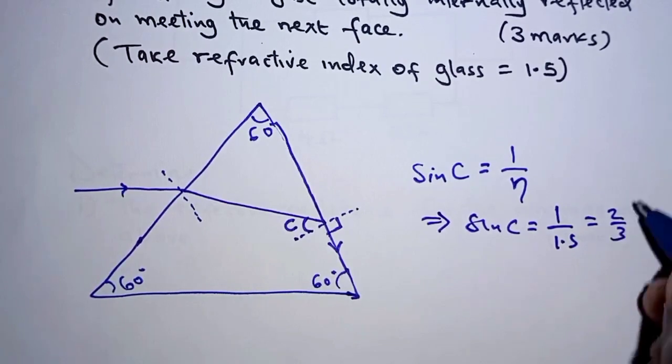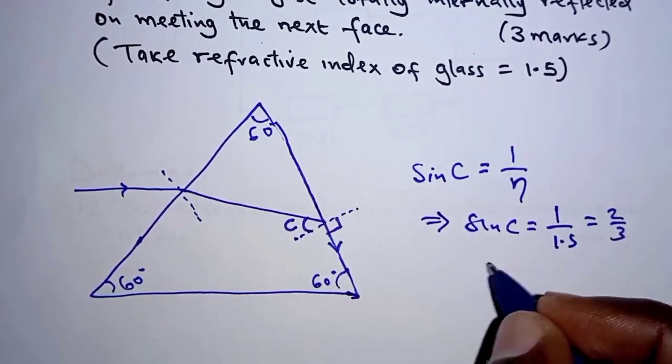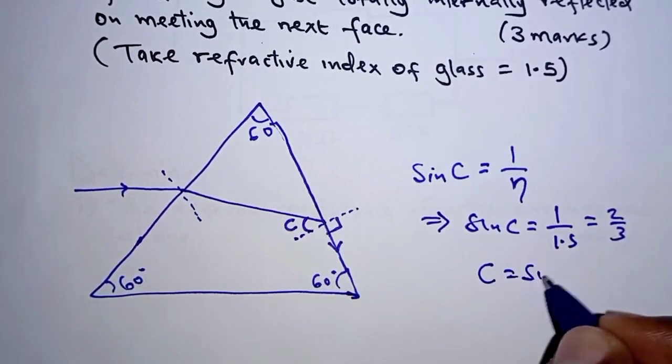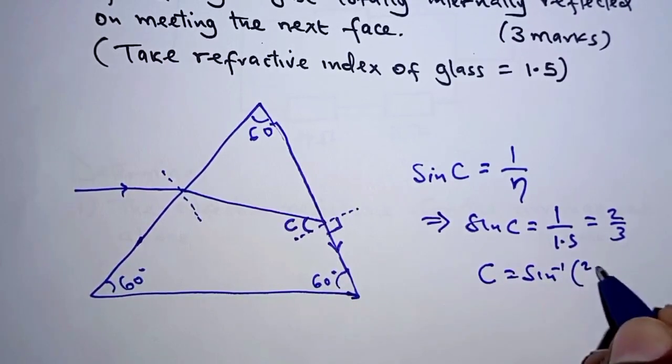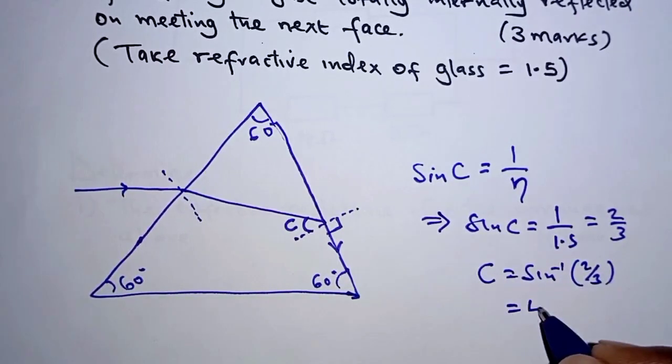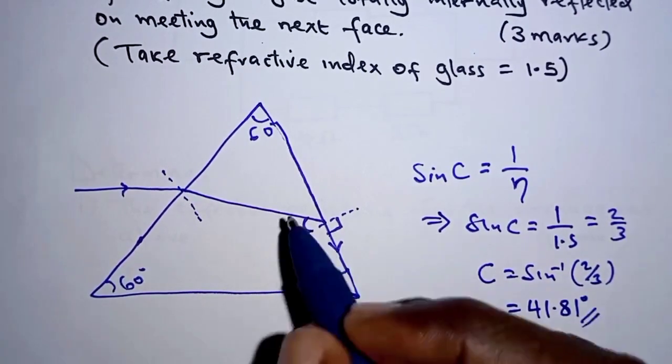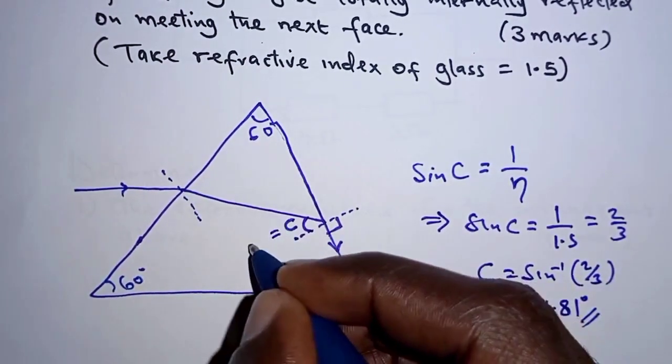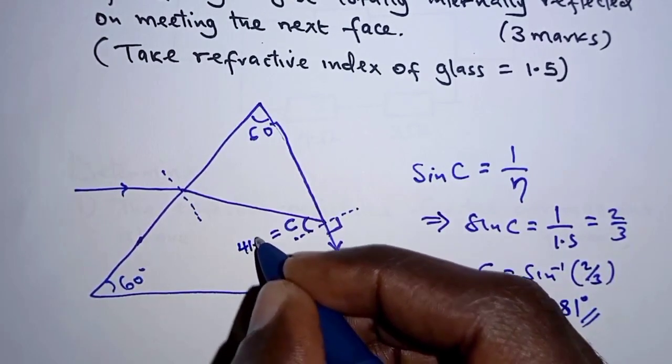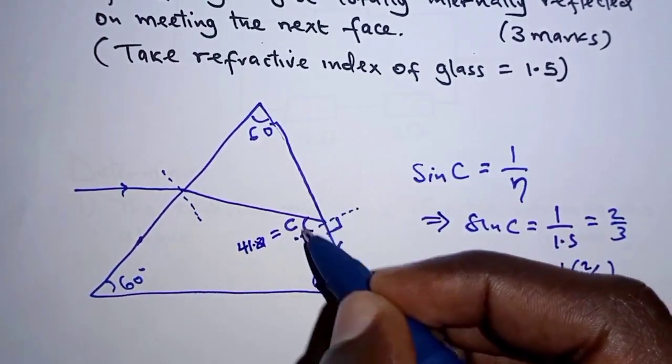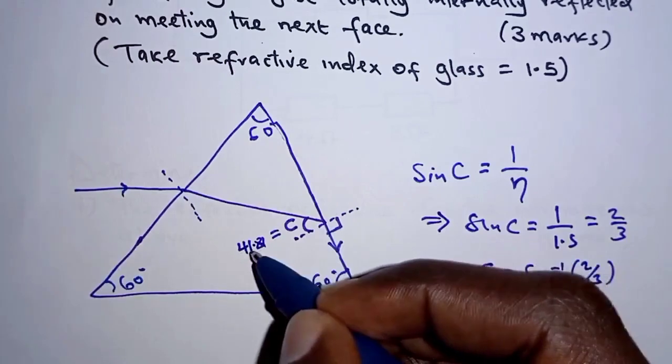So when we get the critical angle c, we simplify the sine inverse of 2 over 3. This is 41.81. Now if the critical angle is 41.81 and all of this angle here is 90, 90 minus 41.81 should be... so this angle is 48.19.